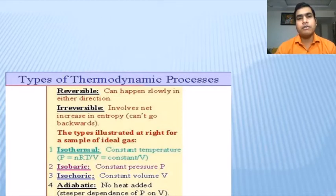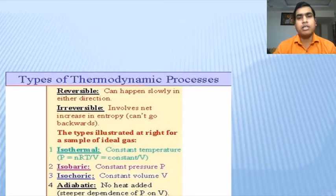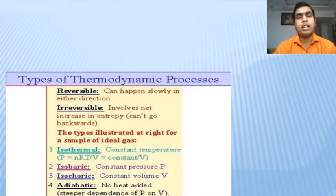An isothermal process is defined as a thermodynamic process where the change of temperature is fixed throughout the thermodynamic course of reaction. Such a process is called an isothermal process. Whereas in an adiabatic process, the heat change is constant throughout the process. In case of an isobaric process, the pressure change will remain constant. Whereas in an isochoric process, the volume change will remain constant.